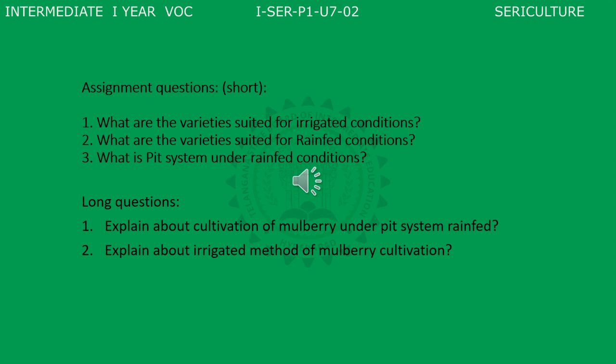The Central Sericulture Research and Training Institute, Mysore, has evolved high-yielding mulberry varieties suited for irrigated conditions, namely S54, S36, and V1. These are the hybrid varieties suited for mulberry under irrigated conditions. The new varieties for rainfed areas are S13, S14, S34, S21, and S28, which are high-yielding under rainfed conditions. These varieties were evolved by the central sericulture research and training institute after extensive research.